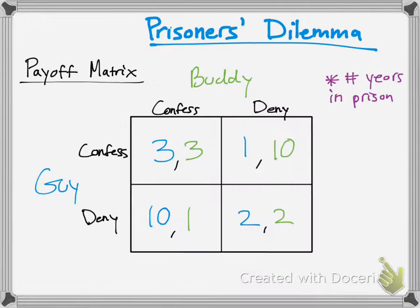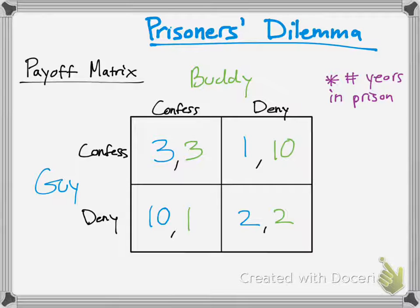We're going to jump into an example here. This is a very popular game theory example. It's called the Prisoner's Dilemma. Notice how the apostrophe is after the S, so this means two prisoners.